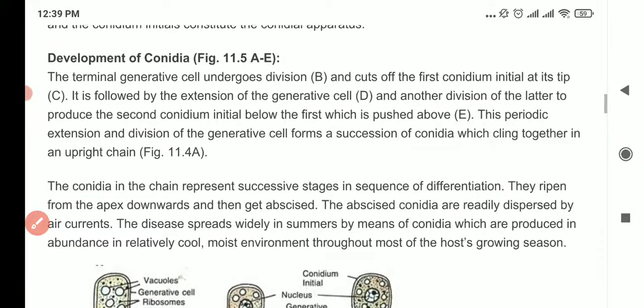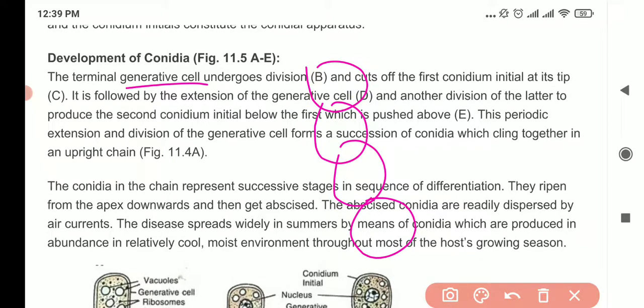So let's see how the conidia develop. The generative cell—remember you have the conidiophore initial, then the foot cell, then the stalk cell, then the generative cell. Then this one will divide.